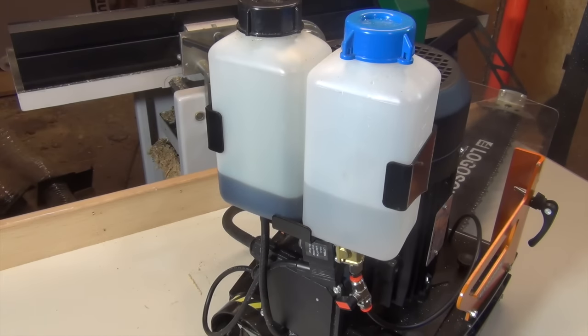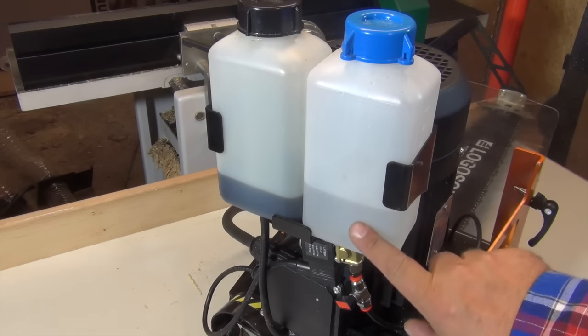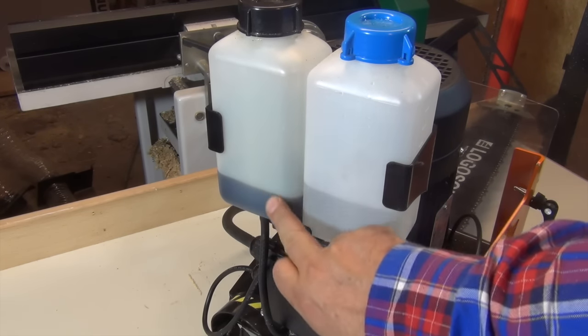In the back you have two bottles. This one is for cooling water and this is for chain oil.